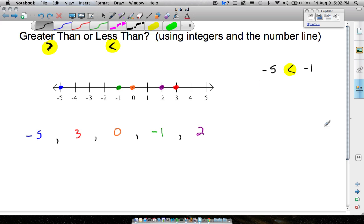Let's look at another one. How about zero and negative five? Which number is farthest to the left? The number that's farthest to the left is the smallest one. The number that's farthest to the right is the bigger one. Zero is farther to the right than negative five is. Therefore, we open the alligator's mouth towards the bigger number. So we can read this as zero is greater than negative five.